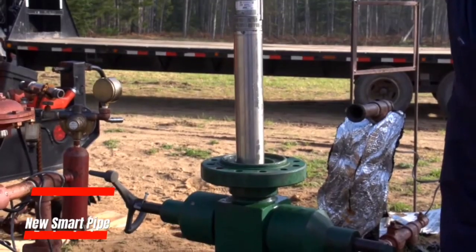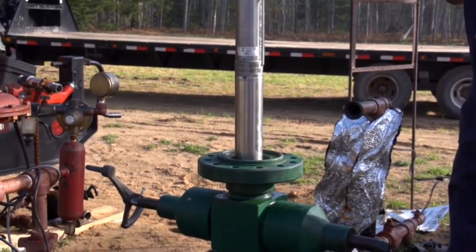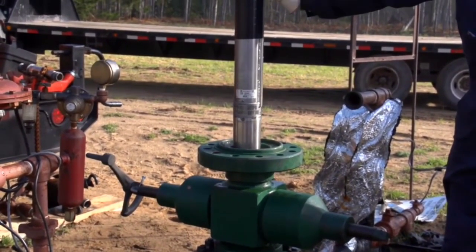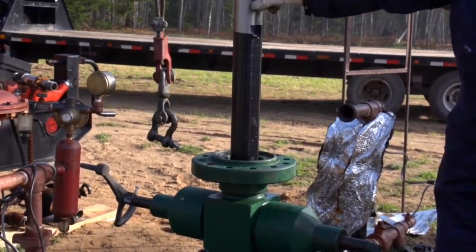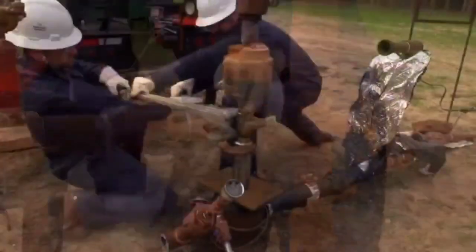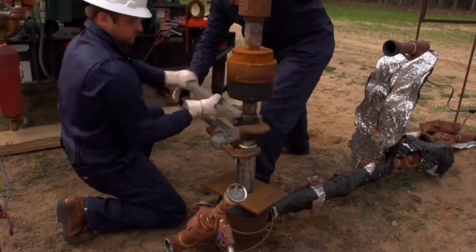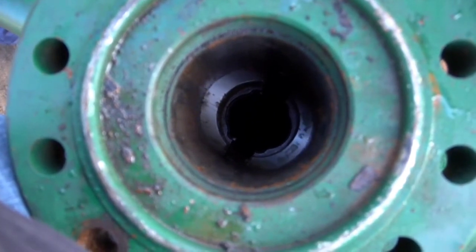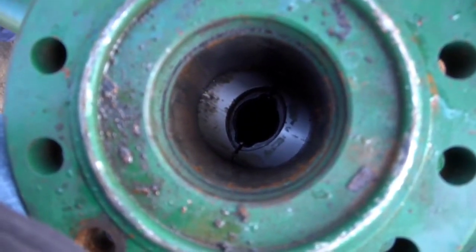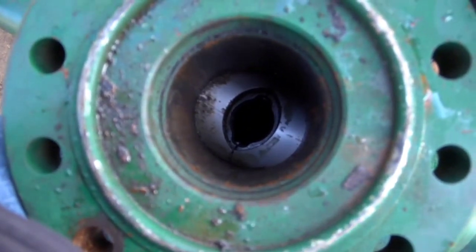Say goodbye to the days of unexpected water damage at home. Thanks to new smart pipe technologies, homeowners can now detect leaks, whether it's a small drip or a burst pipe, and receive instant alerts on their smartphones. These devices go beyond just leak detection. Some monitor temperature, humidity, water flow, and usage. In emergencies, certain smart pipe technologies can even shut off the home's water supply.